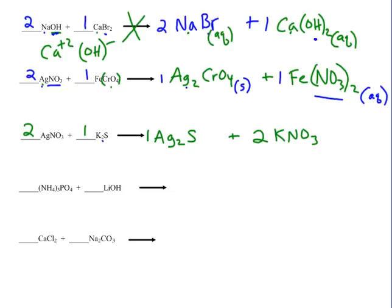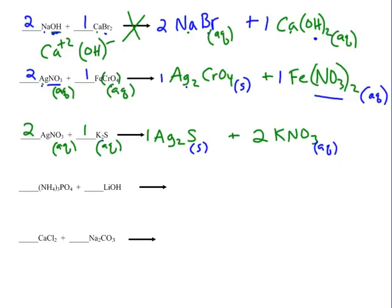Take a moment to check the solubilities of silver sulfide and potassium nitrate. Note that in all these examples, the reactants should be assumed aqueous to start. Silver sulfide is the precipitate — it is a solid in this reaction — so a reaction does indeed happen.